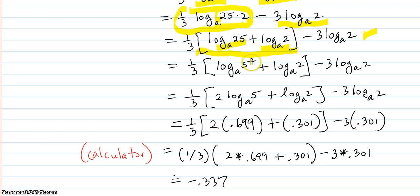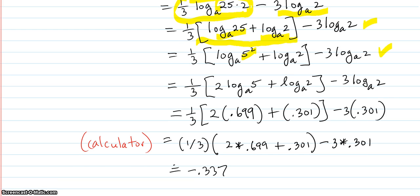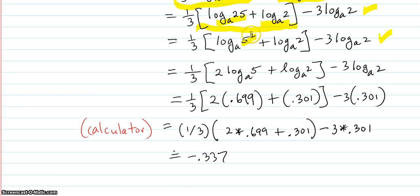Log base A of 25 — since 25 is 5 squared, that's the only move made on that step. Then apply the power rule to bring the 2 to the front, and that's the only move made on that step.